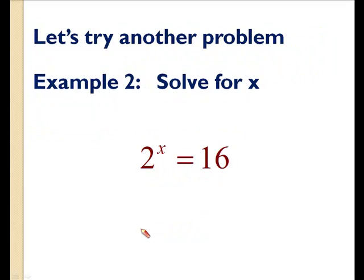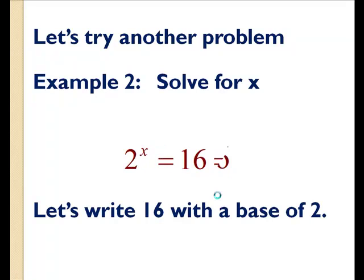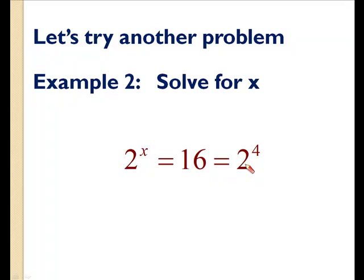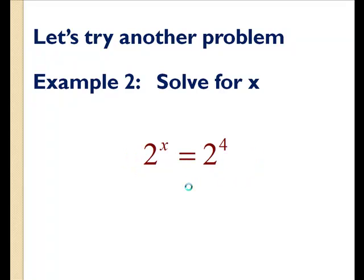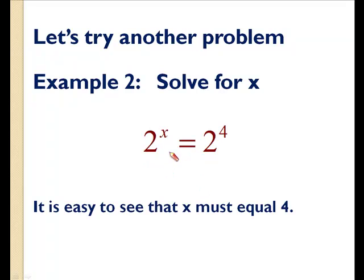Let's try another problem. We have 2 raised to the x equals 16, and I want you to solve for x. We can write the 16 with a base of 2. So 2 raised to the 4 is equivalent to 16, because 2 times 2 times 2 times 2 is 16. So we now have 2 to the x equals 2 to the 4. The only value of x that will make this true is 4.